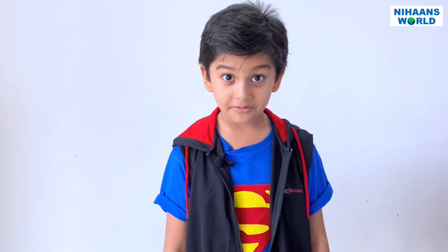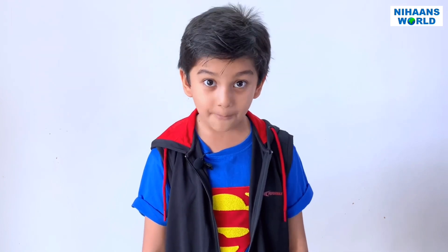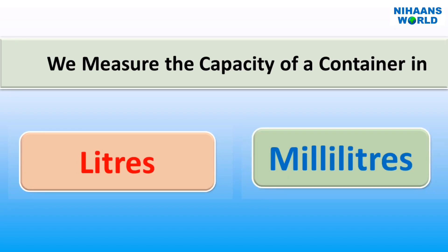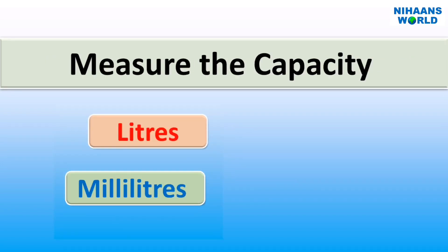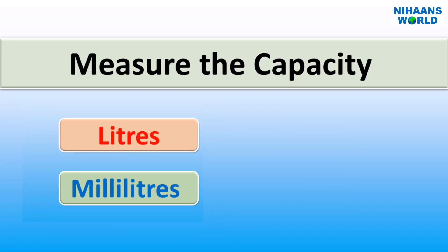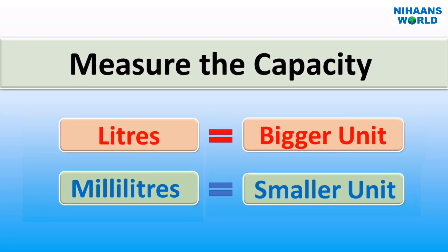What is capacity? The amount of liquid a container can hold is called capacity. We measure the capacity of a container in liters and milliliters. A liter is represented like this, and a milliliter is represented like this. Liters is the bigger unit and milliliters is the smaller unit of capacity.